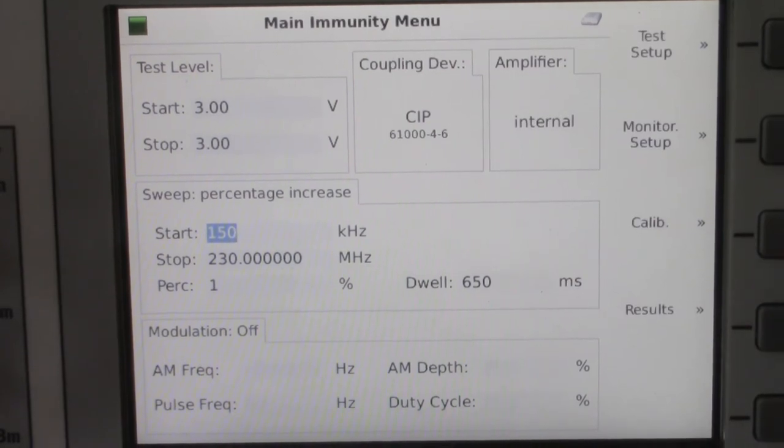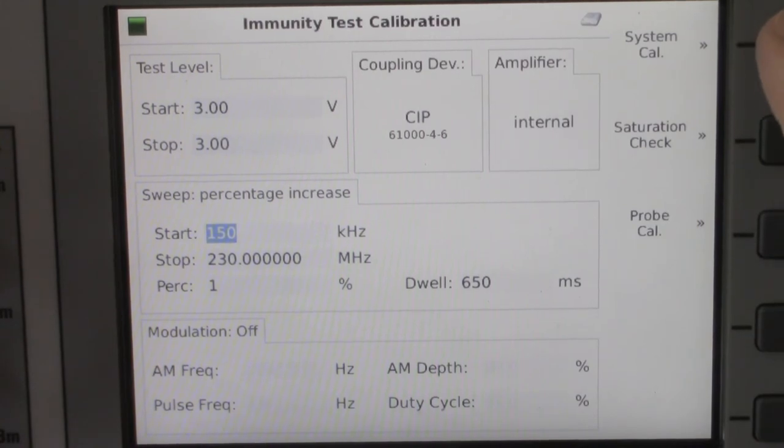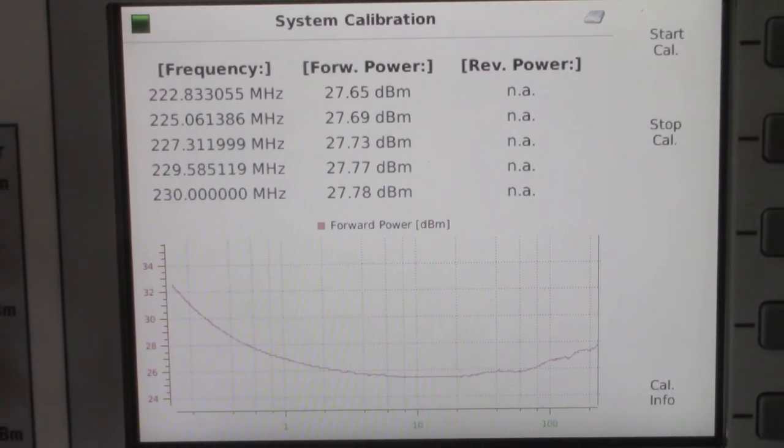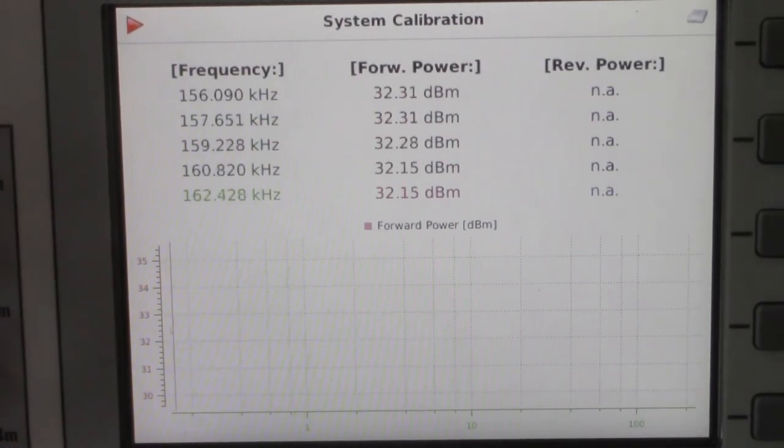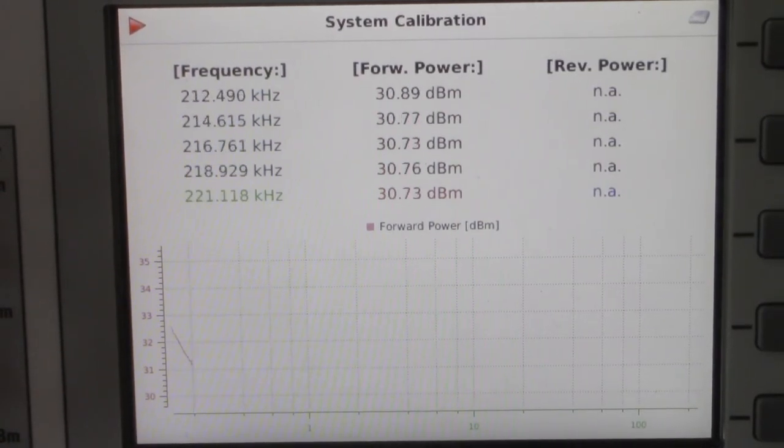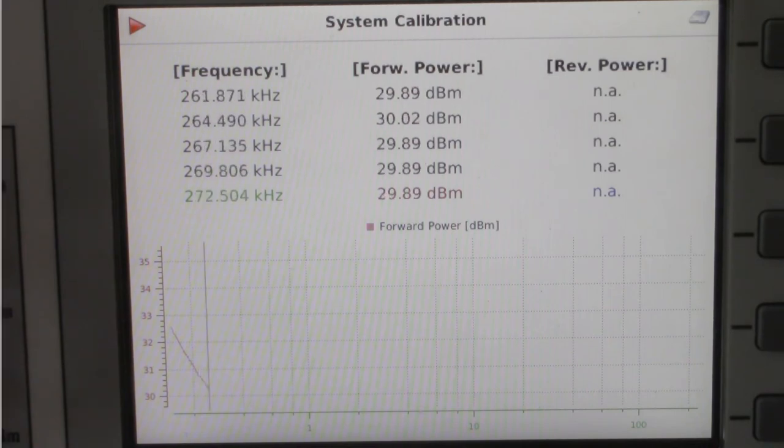Alright, now we're going to hit calibration right here, and we're going to hit system calibration. When we're ready to go, we hit start, which is in the upper right hand corner. Now we're going to let it run through and we're going to stop the video and pick it up once the calibration has been completed.